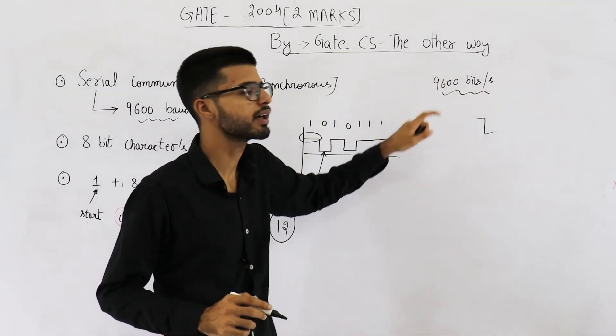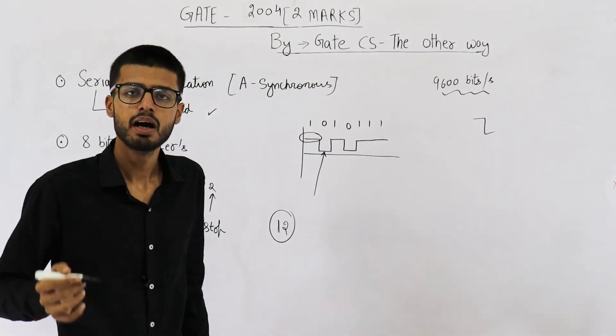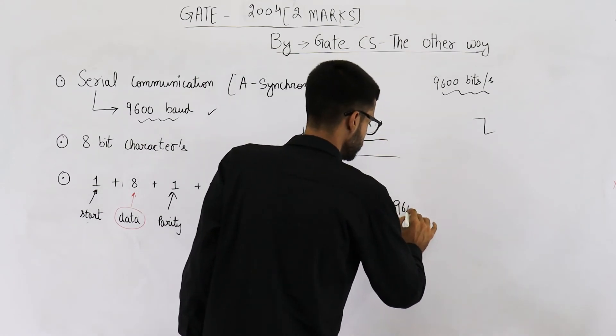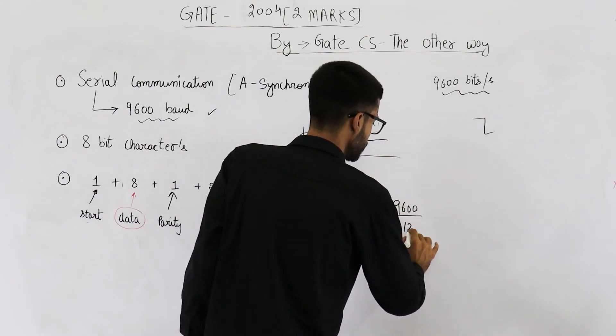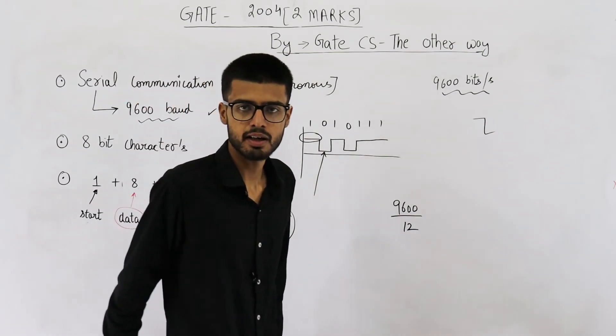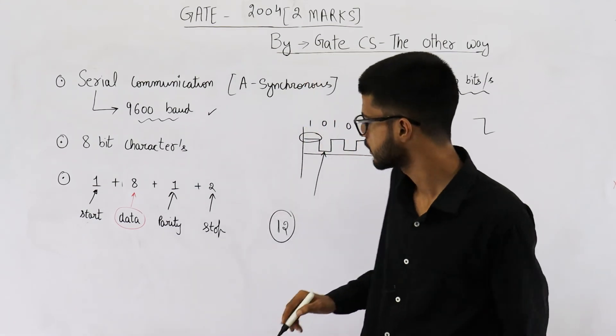In every second, we can send 9600 bits. How many characters are we sending every second? It will be 9600 by 12. So, your answer is 9600 divided by 12, which is 800. Answer to this question is 800.